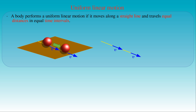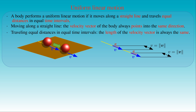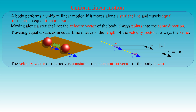If a body is moving along a straight line, then its velocity vector always points in the same direction — that is, in the direction of the motion. The angle alpha between the velocity vector and a fixed direction remains the same during the motion. If the moving body travels equal distances in equal time intervals, then the length of the velocity vector is always the same along the trajectory, meaning the velocity vector of the body is constant during the motion.